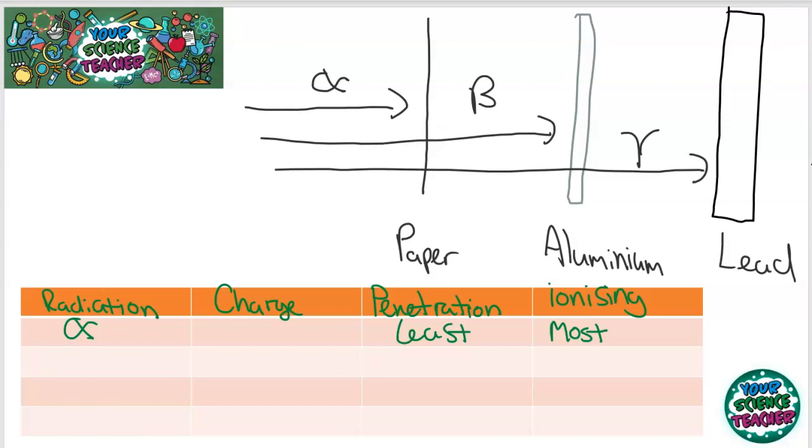That makes it incredibly dangerous as well. If that was to get into your body, it would turn all of the atoms in your body into ions and destroy your cells. It would be very, very bad. But luckily, it's not very penetrating. It couldn't get through your skin. However, if it did get into your body, it would be incredibly harmful. For example, if it was ingested, it would be incredibly dangerous. And alpha radiation obviously has a charge of plus two, as it's a helium nuclei.